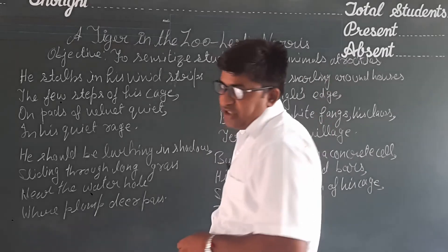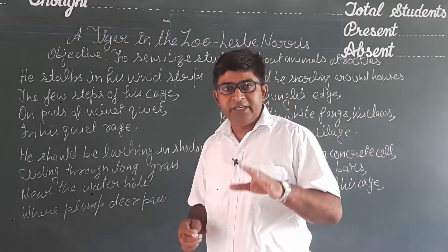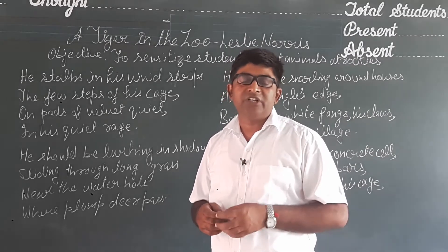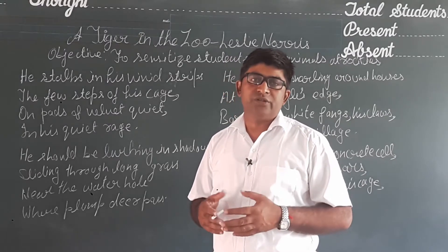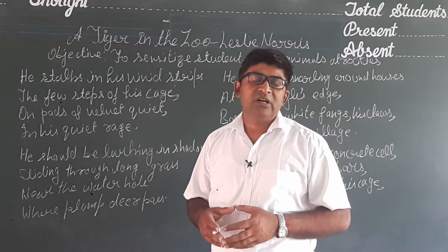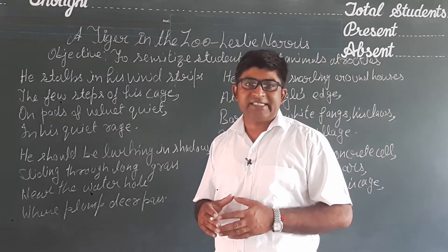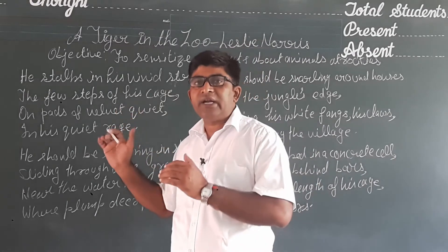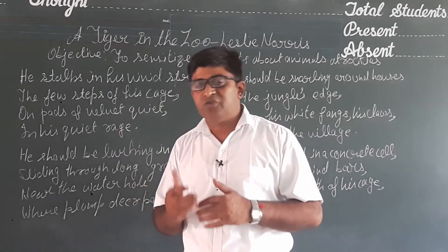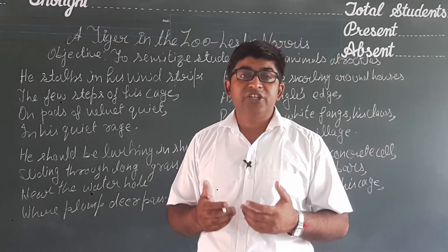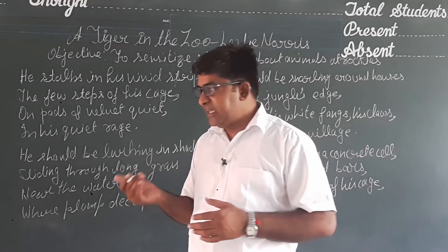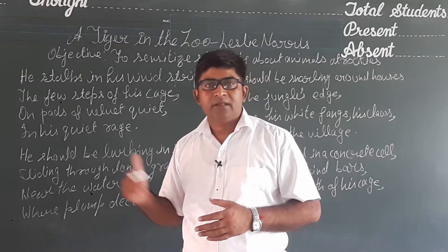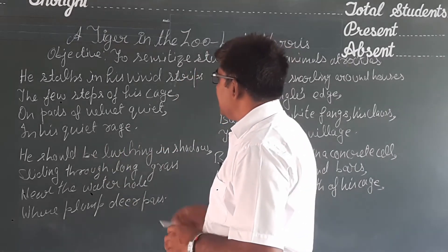The poem aims to sensitize students about animal atrocities. Animals are also living beings; they should be treated lovingly. They love their liberty, and when they are enclosed somewhere, they don't enjoy their life. In the poem, the poet describes the life of a tiger living in a zoo, how the tiger thinks about life outside the zoo in its natural habitat — the forest. In the end, the poet describes the tiger's moments in the zoo.